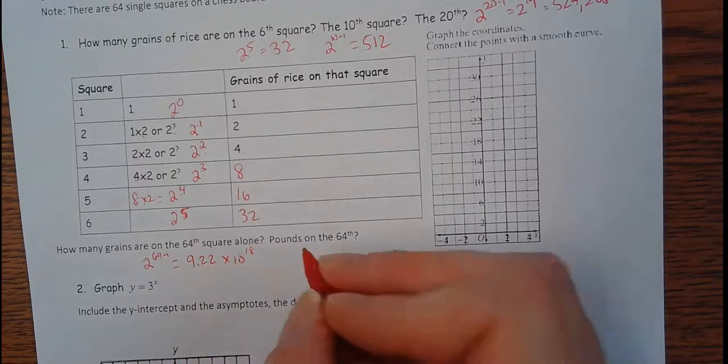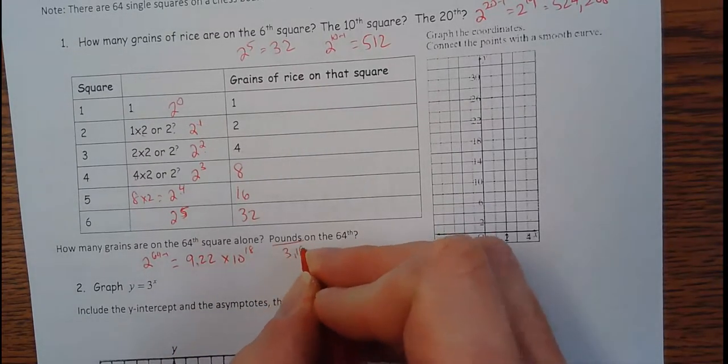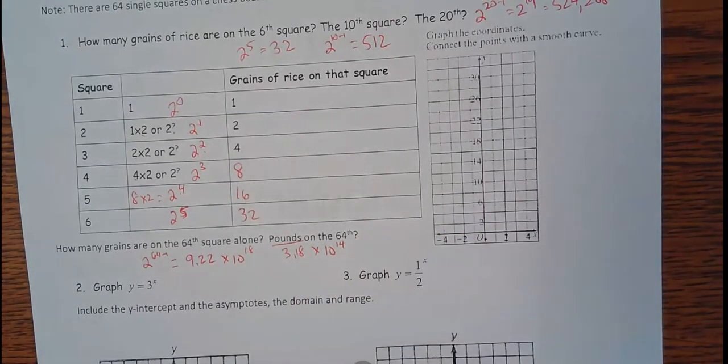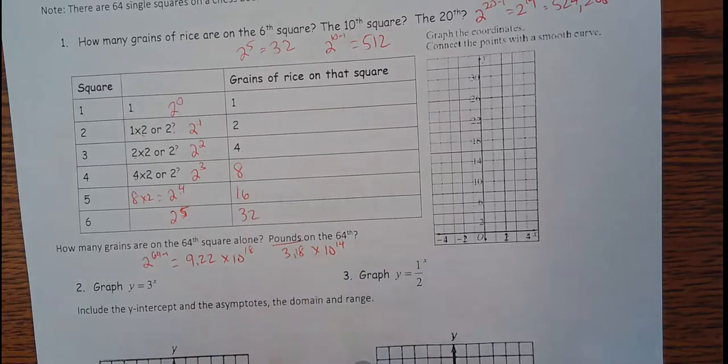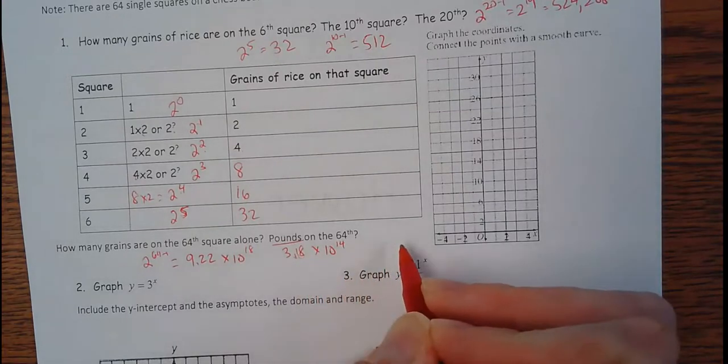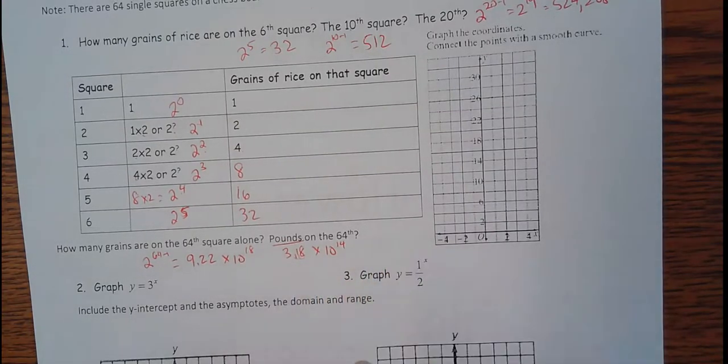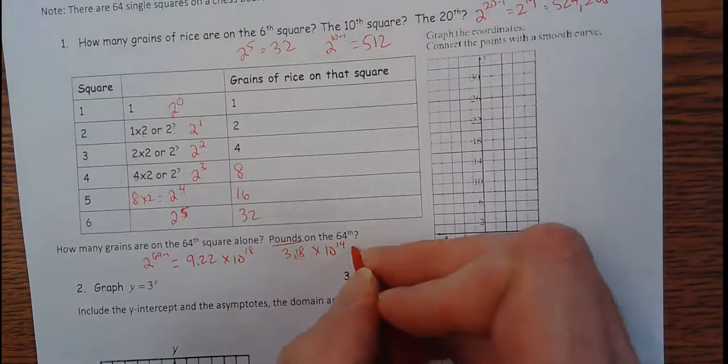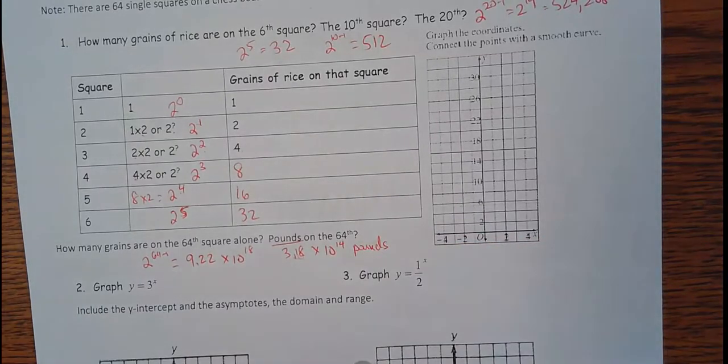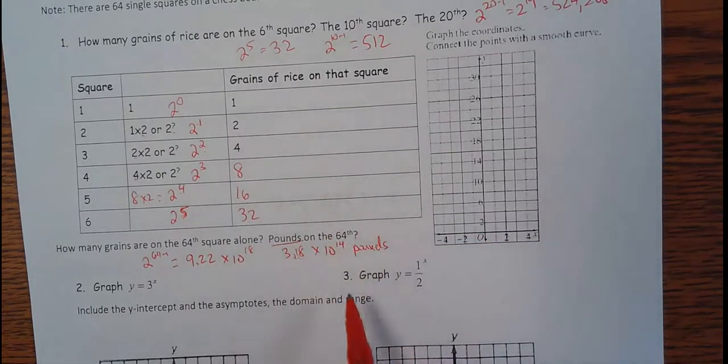How many pounds is that? If you divide that by 29,000, so how many pounds would be 3.18 times 10 to the 14th. Move this decimal 14 places. That's a lot of rice on that one square. So it sounds like this jester tricked the king. My guess is the king got mad and killed the jester for tricking him and making him look silly.